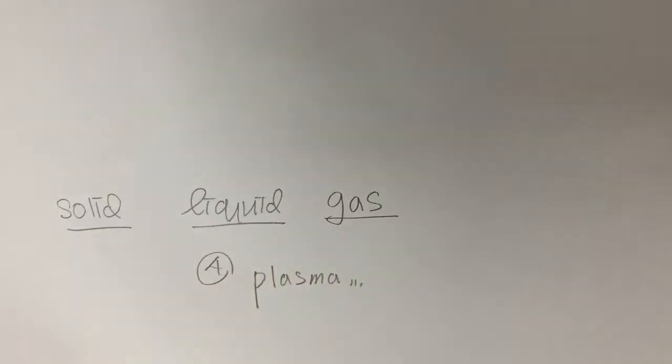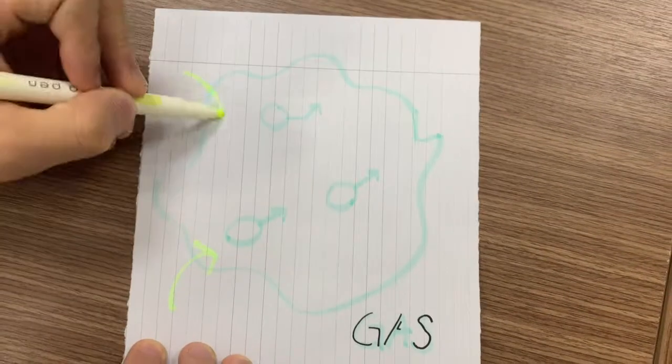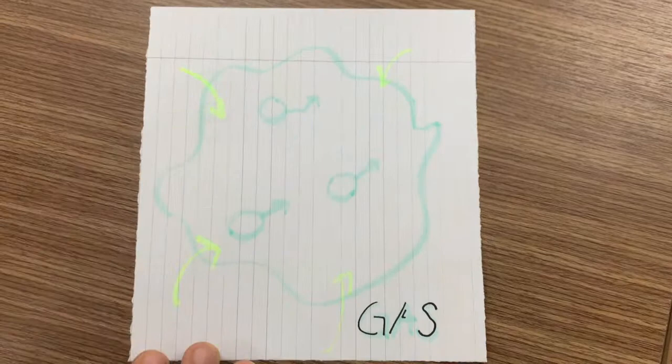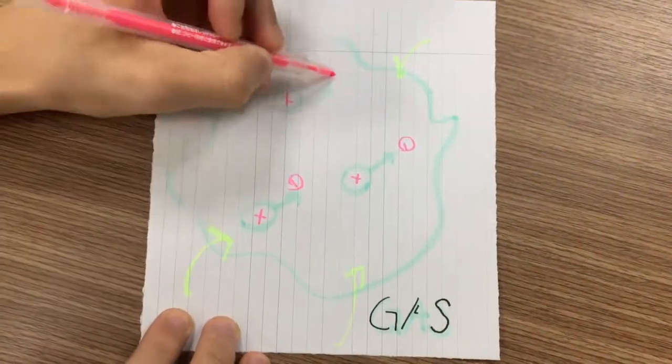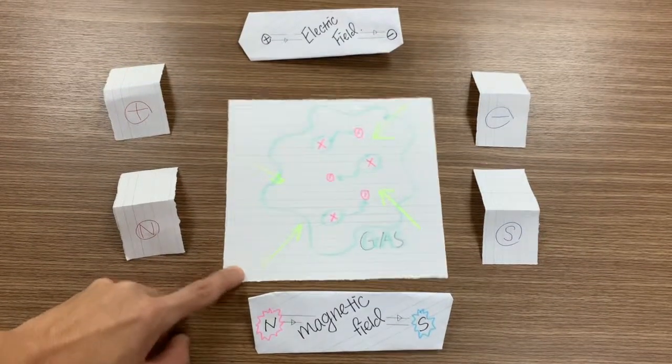When sufficient amount of heat is applied to a gas, electrons are stripped off from the atom, creating negatively charged free electrons and positively charged ions. Therefore, plasma is readily affected by external electric and magnetic fields.